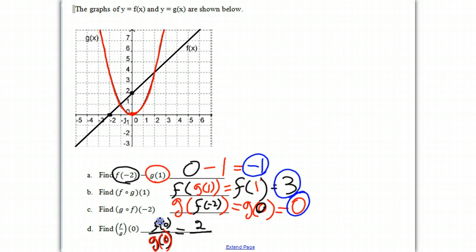And for g of 0, when x is 0, we've done this before, y is 0 right there on our red function, or g of x. And therefore, we put 0. And we know that we cannot have a 0 in the denominator. And so therefore, this is undefined. And that is our answer.